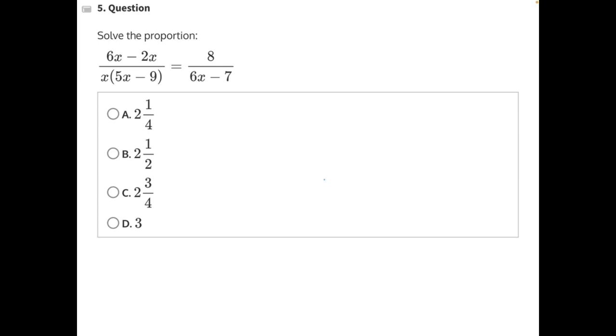To solve this proportion, we actually don't want to cross multiply yet. We want to simplify this half of our proportion first. Up in the numerator, we have two like terms that can be combined. 6x minus 2x would give us 4x over x times 5x minus 9.